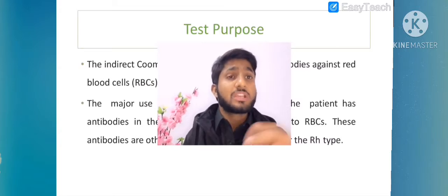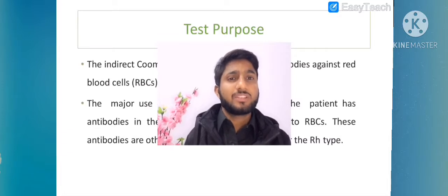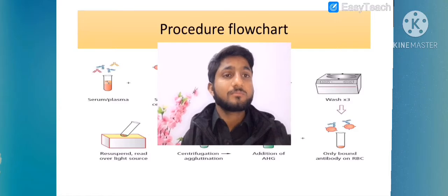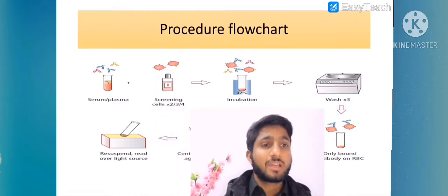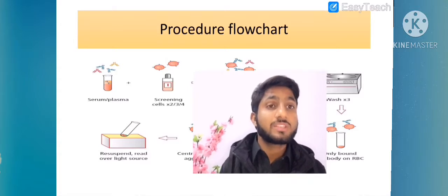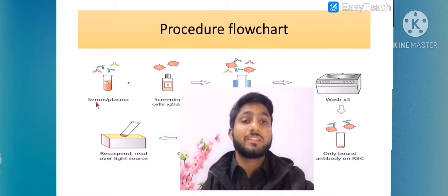To overcome transfusion reactions, we add anti-AHG protein in the Coombs test. With this, we will be able to know whether the blood is compatible or not. Now for the procedure flowchart: if you are preparing anti-AHG proteins, what is the procedure? You have to take serum or plasma in case of indirect antigen testing.